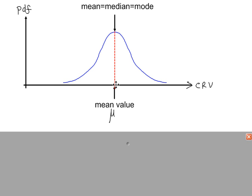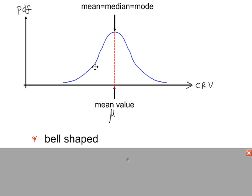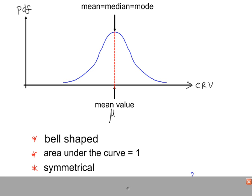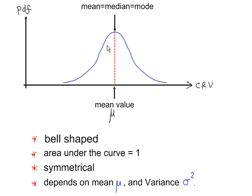We have our continuous random variable on this axis — this could represent height, weight, time, anything that's continuous in nature. So the distribution is bell-shaped, the total area under the curve is equal to 1, the curve is symmetrical, and the shape of the curve depends on two parameters: the population mean and the population variance.